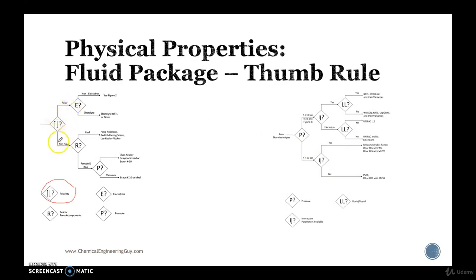Let's say we're using benzene and toluene. So it's non-polar. Is it real or pseudo-component? Well, we know that benzene and toluene are already in the HYSYS database. So it's real. So it will tell me, choose Peng-Robinson or RKS Redlich-Kwong-Soave or Lee-Kesler-Plöcker.